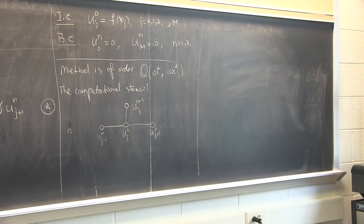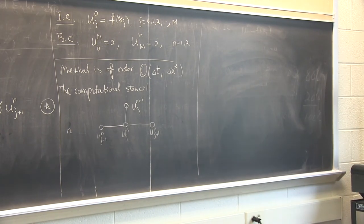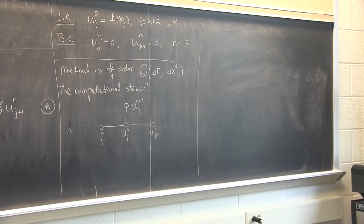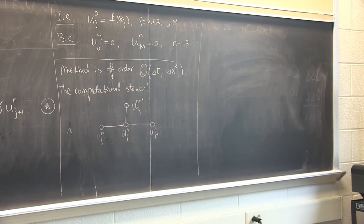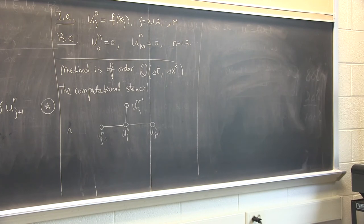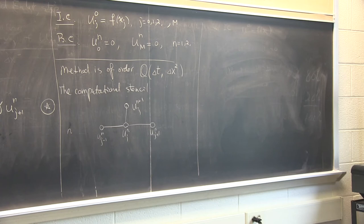That's the algorithm as such — you can set it up and run. But you need to be a little smarter. You need to know: does it converge as delta T and delta x go to zero? Will this method generate stable approximations to the exact solution? Will the properties of the exact solution of the heat equation be preserved by the numerical approximation?